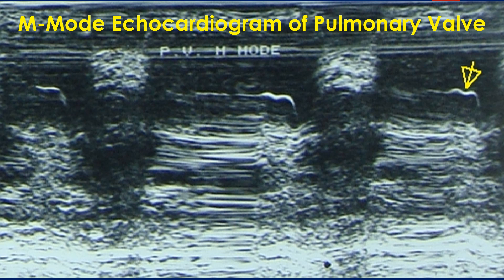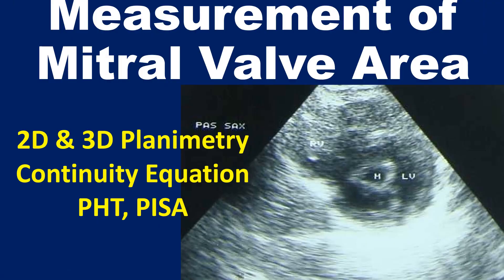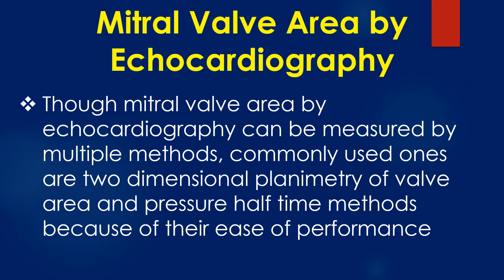When Doppler echo was not available, M-mode of the pulmonary valve was an important tool to assess pulmonary hypertension. This is a discussion on the assessment of mitral valve area by echocardiography using multiple methods. Though mitral valve area can be measured by multiple methods, the commonly used ones are two-dimensional planimetry and the pressure half-time method because of their ease of performance.